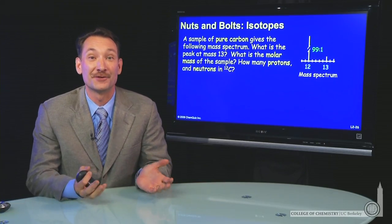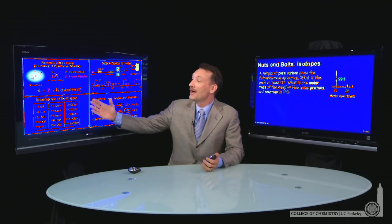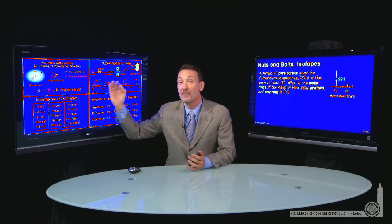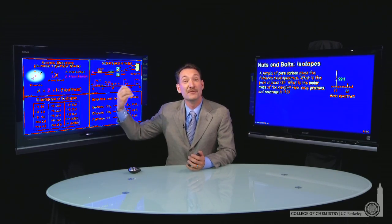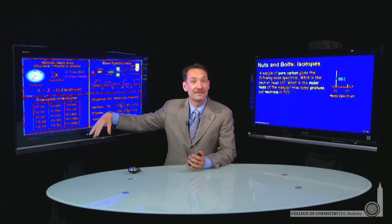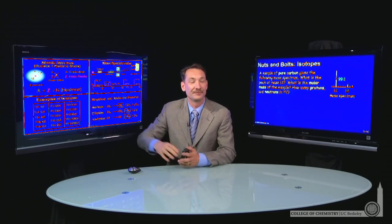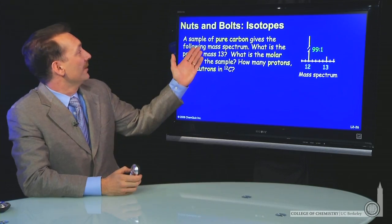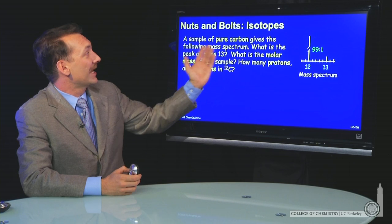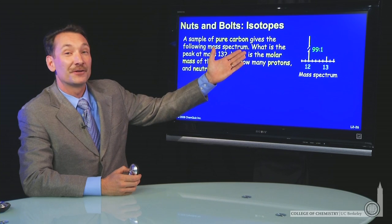Let's do a calculation involving isotopes. Remember, isotopes are elements where the number of protons is the same, but the number of neutrons in the nucleus is different, so you have different masses among different isotopes. Here we're going to take a sample of pure carbon and look at the mass spectrum.